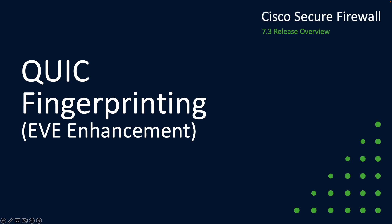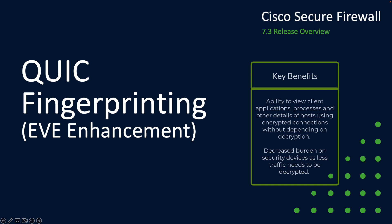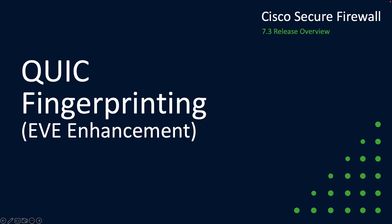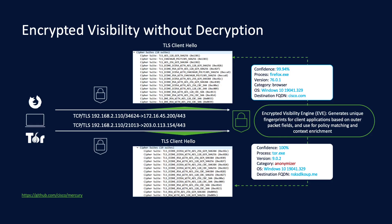Let's begin with the quick fingerprinting update. Over the past couple of releases we've introduced our encrypted visibility engine, or EVE. EVE allows you to see into TLS encrypted flows and to identify applications and malware without the need to perform decryption. It's a great security feature that reduces the performance overhead when looking for threats or policy violations within encrypted traffic.